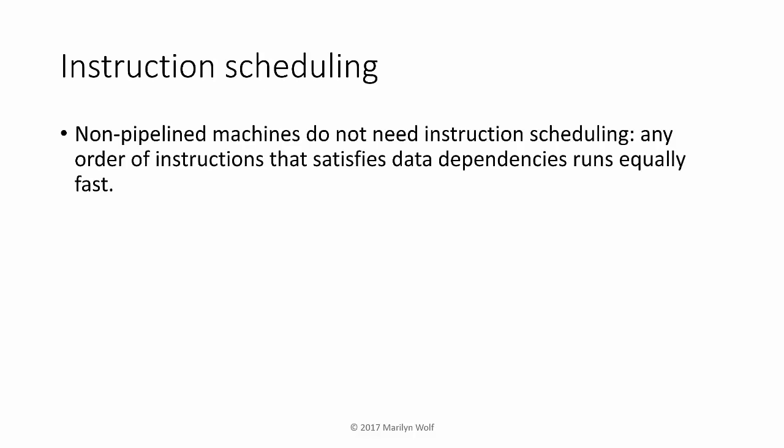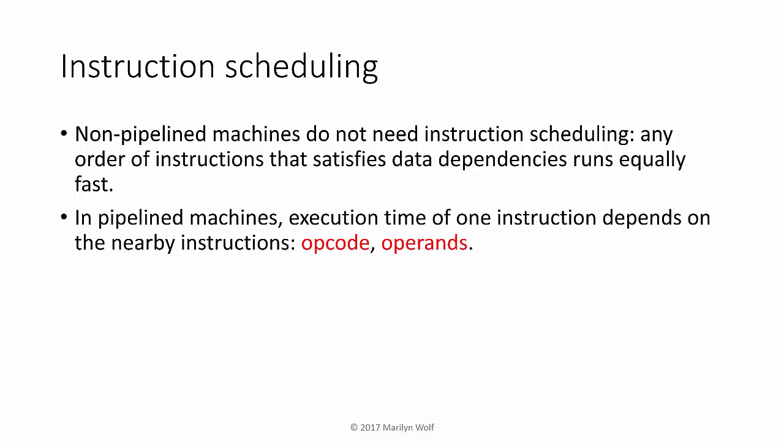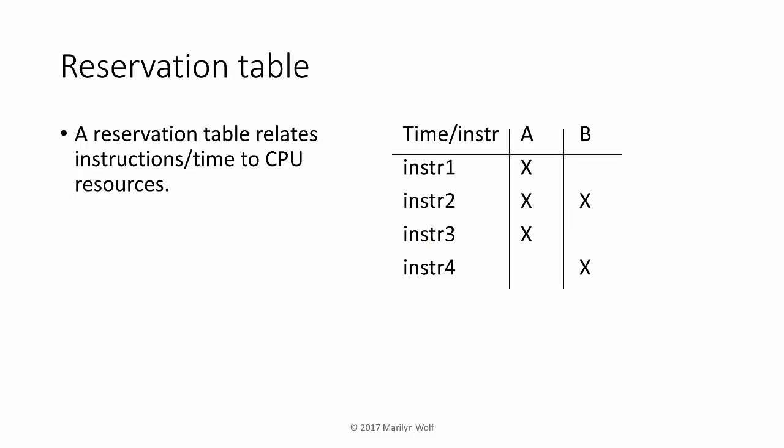Instruction scheduling determines the order in which instructions are executed, which can allow us to take better advantage of parallelism within the processor. Non-pipelined machines don't need instruction scheduling because instruction order doesn't affect resource utilization. But in a pipelined machine, the execution time of one instruction depends upon nearby instructions — we may be using a functional unit for another instruction or may not be done computing a given operand. We can use a reservation table to describe the utilization of hardware resources: the columns are the different resources and the rows are the different instructions, and we use this table to optimize how instructions are executed.